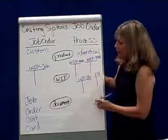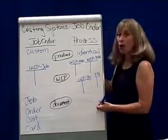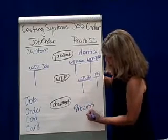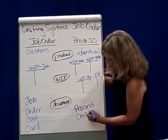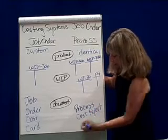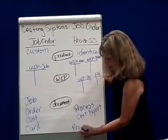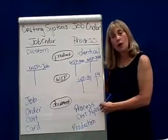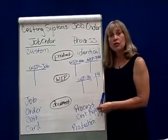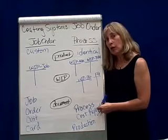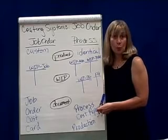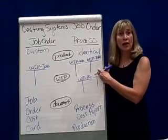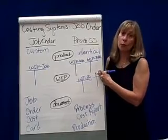Under process costing, what we'll see in the process costing chapter is a process cost report, which is also called the production report. You have to do this report in order to accumulate your costs so you know how much cost to assign to ending work in process and to the goods, products, or services completed. That's a little bit about comparing and contrasting job order versus process costing.